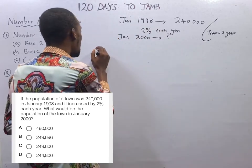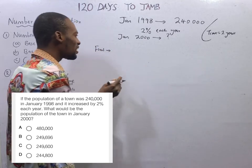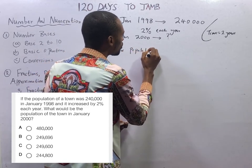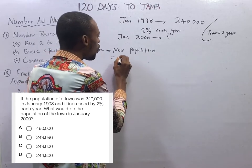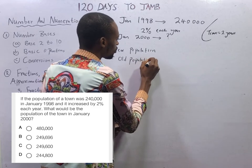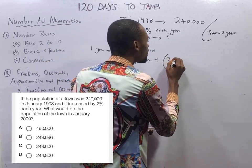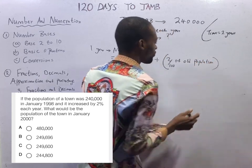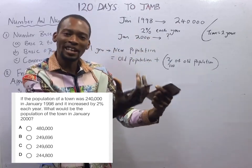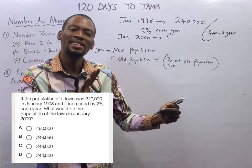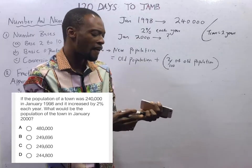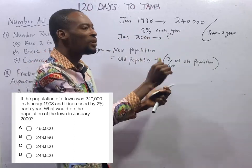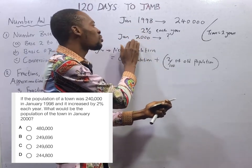This population increased by two percent each year. What does that mean? It means after one year the new population equals old population plus the increase, which is 2% of the old population. Any value you get here — after another one year, that value will increase by 2% again, and it continues. But we are restricting the calculation to two years.